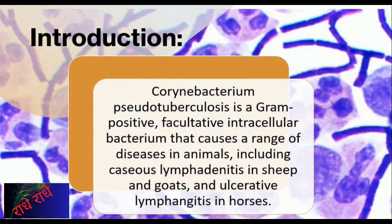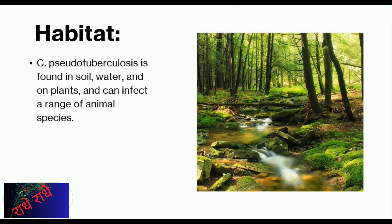Corynebacterium pseudotuberculosis is a gram-positive bacterium that is facultative intracellular, meaning it has the potential to reside and grow both within and outside of the cell. Known to cause illnesses primarily in animals, it is responsible for caseous lymphadenitis in sheep and goats and ulcerative lymphangitis in horses. It is found in soil, water, and on plants, and is capable of affecting a diverse range of animal species, leading to abscesses, granulomatous lymphadenitis, and caseous lymphadenitis. Proper precautions should be taken to avoid contamination.